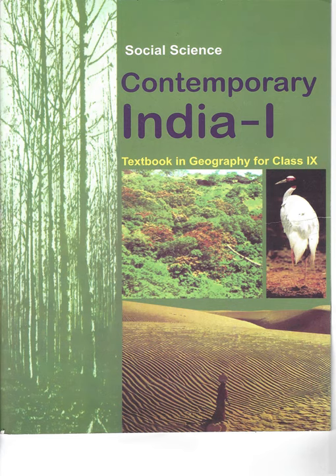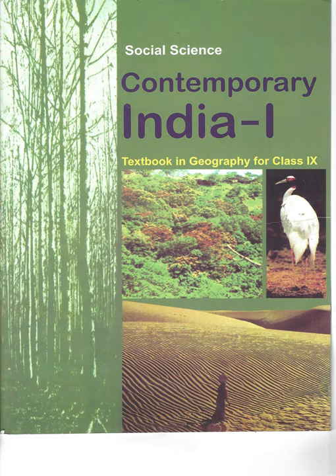The Indian Desert lies toward the western margins of the Aravalli Hills. It is an undulating sandy plain covered with sand dunes. This region receives very low rainfall — below 150 mm per year. It has an arid climate with low vegetation cover. Streams appear during the rainy season but soon disappear into the sand, as they do not have enough water to reach the sea. Luni is the only large river in this region. Barchans cover large areas but longitudinal dunes become more prominent near the Indo-Pakistan boundary. If you visit Jaisalmer, you may go to see a group of barchans.